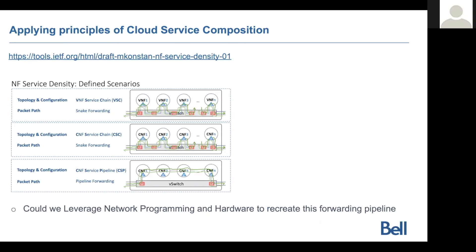Looking at how cloud approaches these challenges, there are new models. I'm referencing a draft around service entity that shows in cloud you can create chains using basic plumbing like virtual wires or layer-two connections between functions. More interesting is the pipeline forwarding model, where you create virtualized links between boxes, enter the virtual or cloud platform as a physical entry point, stay in user space constructs in the case of containers, and achieve greater linear speed with increased service density — as the reports prove quite well.